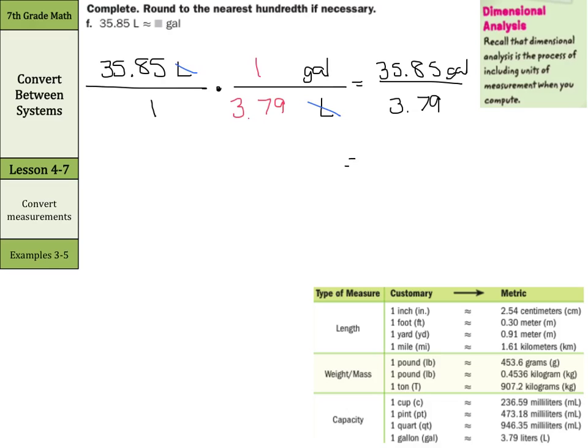our result is 9.4591. And this still is our gallons. And to round to the nearest hundredth, look to the thousandth spot. We do need to round up. So 9.46 gallons is our final answer.